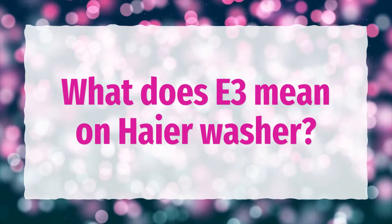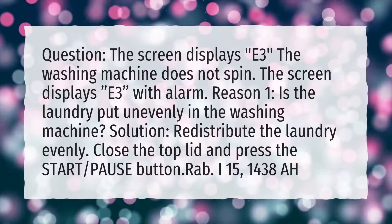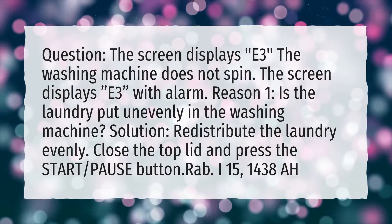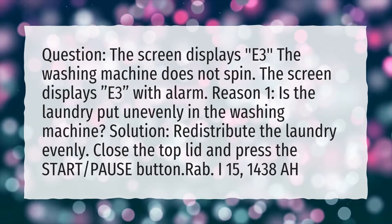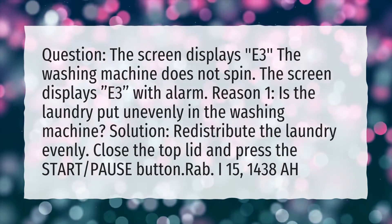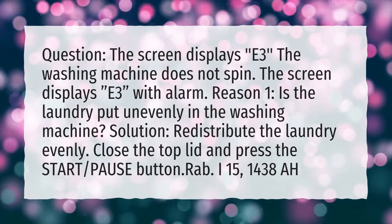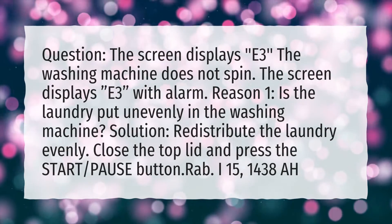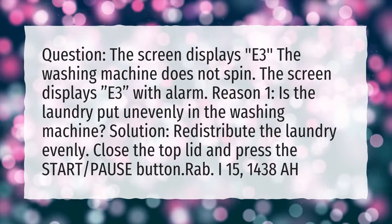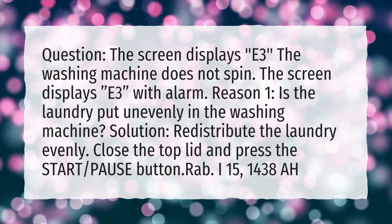What does E3 mean on a Haier washer? The screen displays E3 and the washing machine does not spin, with an alarm. Reason 1: Is the laundry put unevenly in the washing machine? Solution: Redistribute the laundry evenly.